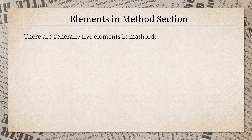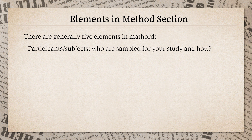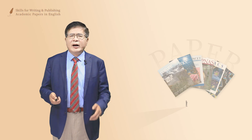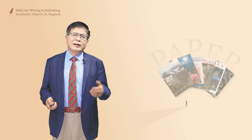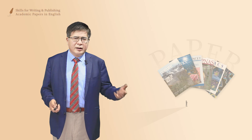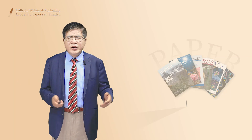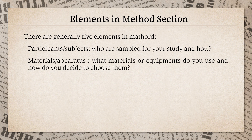There are generally five components in a method section. First, participants or subjects — meaning who is sampled for your study and how, including whether they were randomly or conveniently sampled, and information on age and gender distribution. Second, materials or apparatus — meaning what materials or equipment you use and how you decided to choose them.